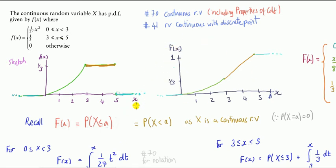Going back to the PDF: if you want the probability x is less than 2, it's the area to the left, requiring integration. But if you have the CDF, all you have to do is read off the graph — that's the definition. So the probability x is less than or equal to 3? Just read the graph: it's one-third. Probability x is less than or equal to 5? Read the graph: it's 1.